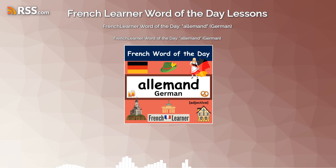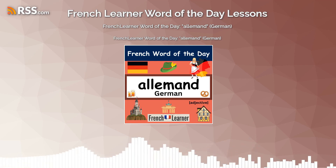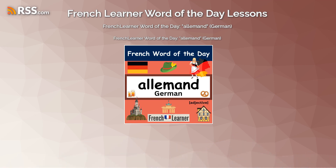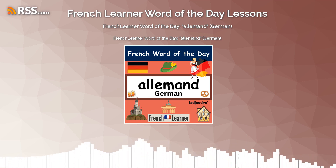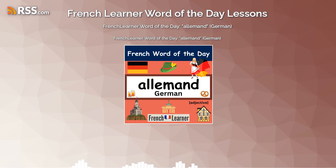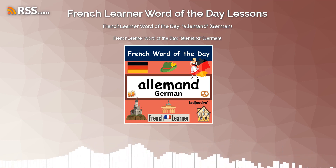Germany is a feminine country, so we say voyager en Allemagne. There's a liaison on that en, so we don't say en Allemagne — it's en Allemagne. Liaison. J'apprends l'allemand avant de voyager en Allemagne. And just a note: avant de plus infinitive means 'before blanking,' so before traveling is avant de voyager.